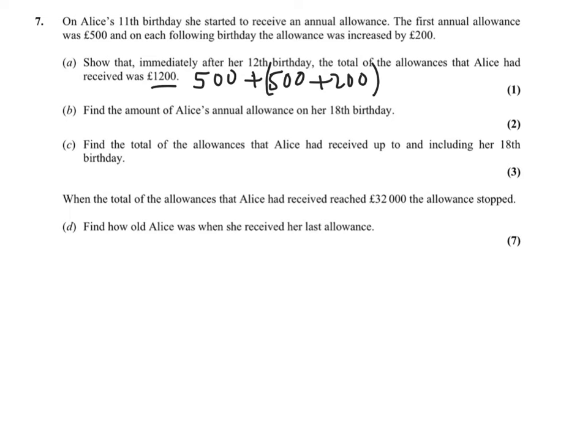Find the amount of Alice's allowance on her 18th birthday. Well, we've got the first, we're going to be using this, A plus N minus 1 D. And you know that it should be £500 plus 8 minus 1, and then the difference is £200. So there you go, that should be nice and easy.